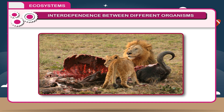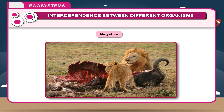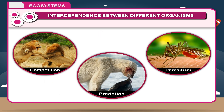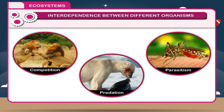On the other hand, when members of one population compete for food and depend on others, it is called negative interaction. Examples of negative interactions include competition, predation, and parasitism.